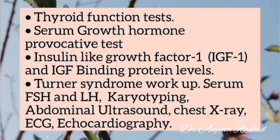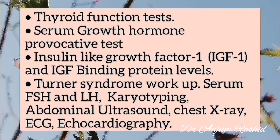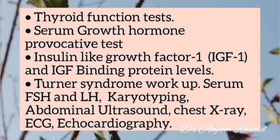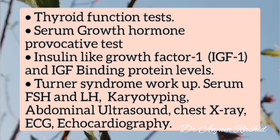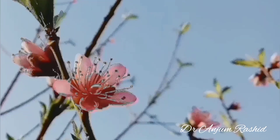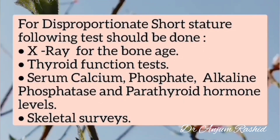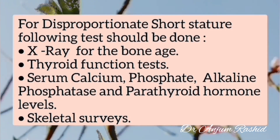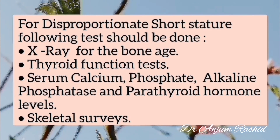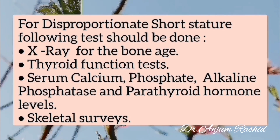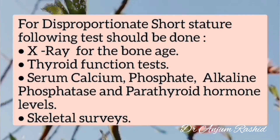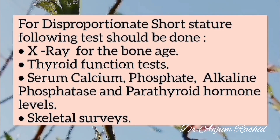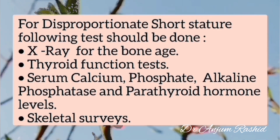Turner syndrome workup includes serum FSH and LH, karyotyping, abdominal ultrasound, chest X-ray, ECG, and echocardiography. For disproportionate short stature, the following tests are done: X-ray for bone age, thyroid function test, serum calcium, phosphate, alkaline phosphatase, and parathyroid hormone levels, and skeletal surveys.